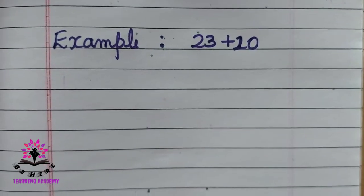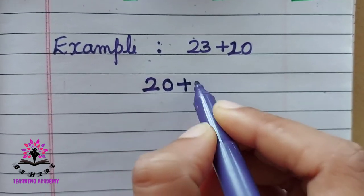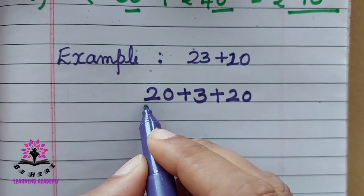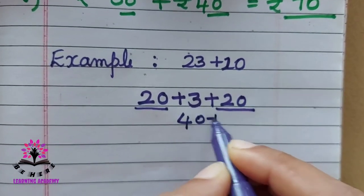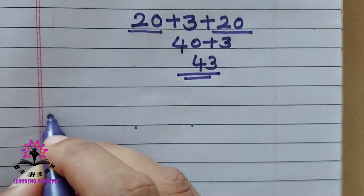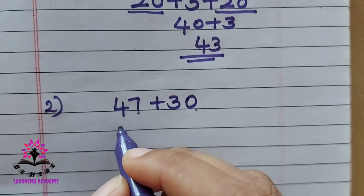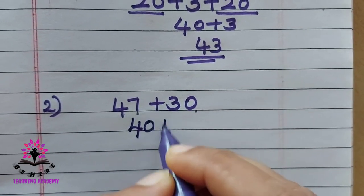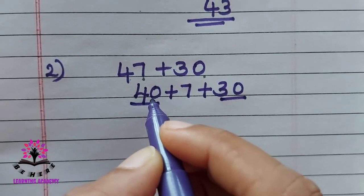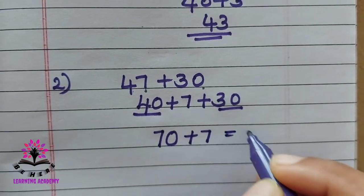See the next problem: 23 plus 20. Split 23 as 20 plus 3, then write 20. Now 20 plus 20 is 40, plus 3 is 43. One more example: 47 plus 30. Split 47 as 40 plus 7, then 30. Both tens parts have 0 in the unit place, so 4 plus 3 is 7, giving 70; then add 7 in the unit place — the answer is 77.